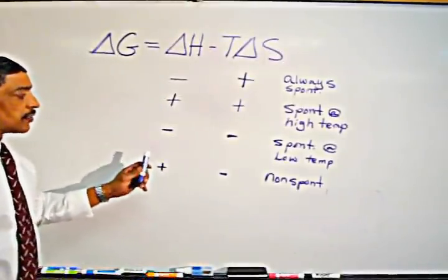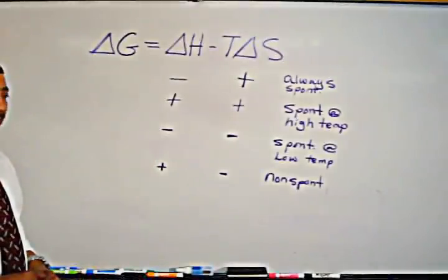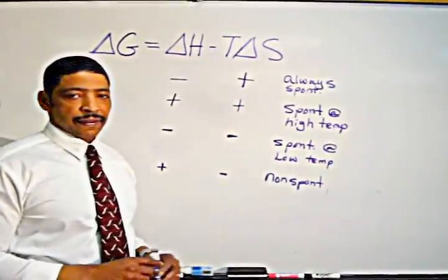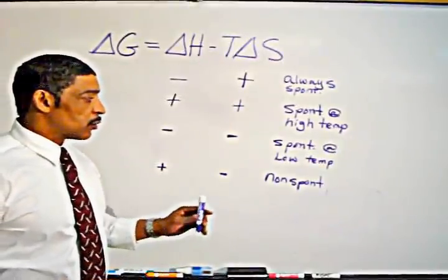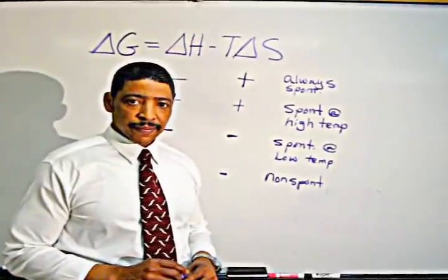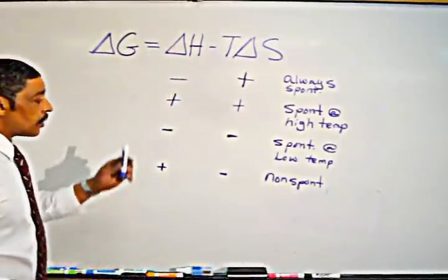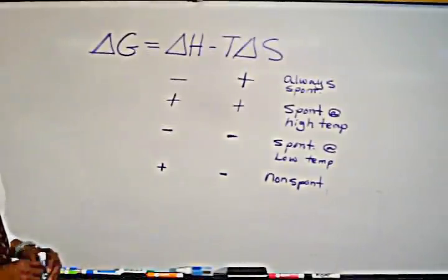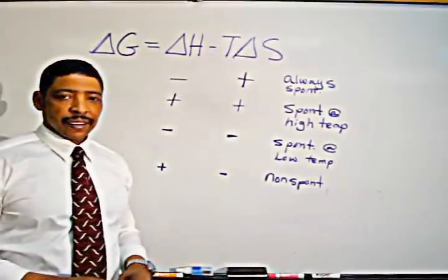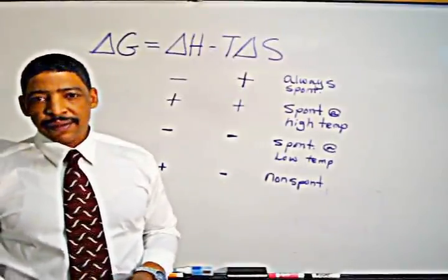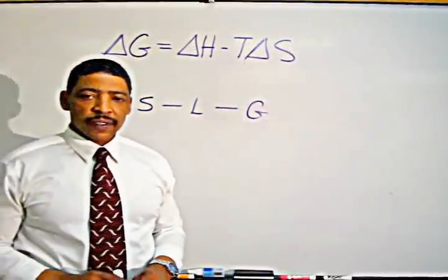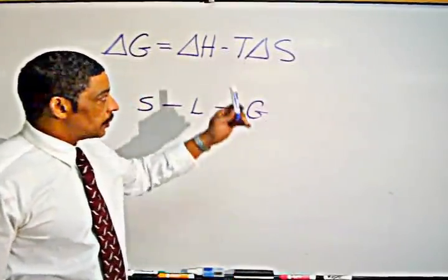If the delta H is negative or exothermic and the T delta S, or entropy, is also negative, then this reaction will be spontaneous at low temperatures. If the delta H is positive and the T delta S, or entropy, is negative, then that reaction will be non-spontaneous. The entropy or disorder of a system is dependent upon the temperature; as a substance goes from a solid to a liquid to a gas, its entropy is constantly increasing.